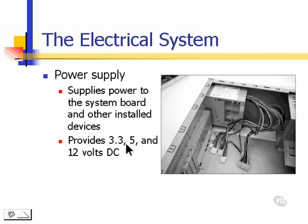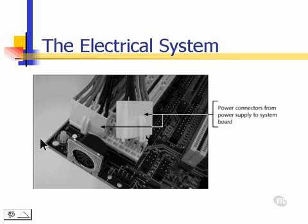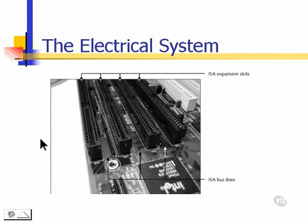The electrical system, powered by the power supply, supplies electricity in 3.3, 5, and 12 volts DC. Most processors use either 3.3 volts or 5 volts, and most electric motors inside a computer use 12 volts DC. The power supply connects to the motherboard to power all the devices, and then to the expansion slots for expandability power as well.